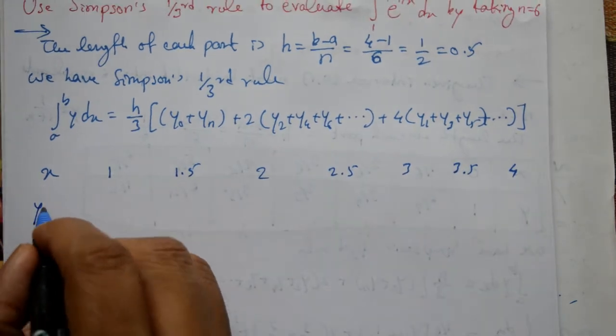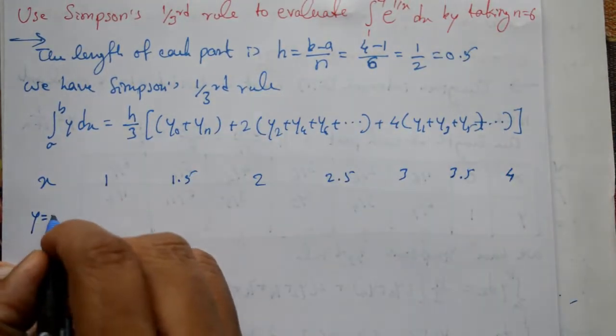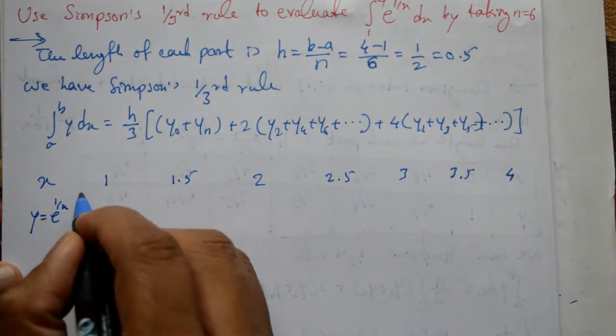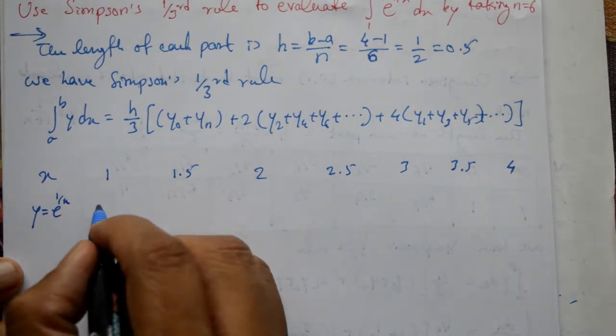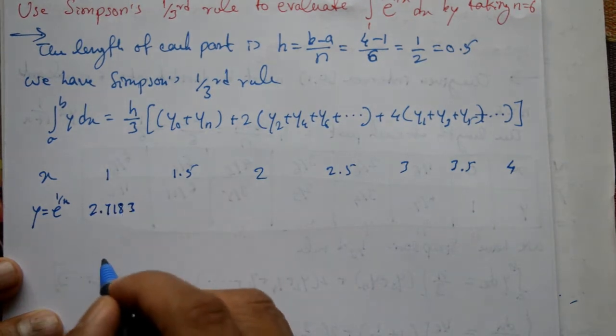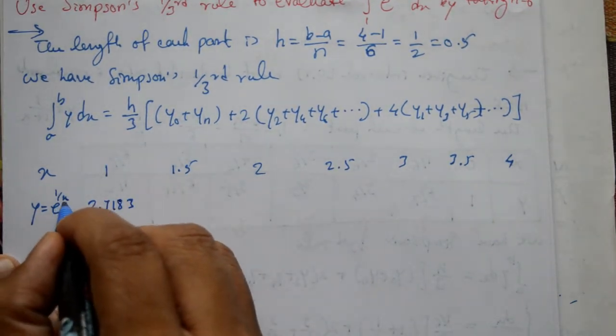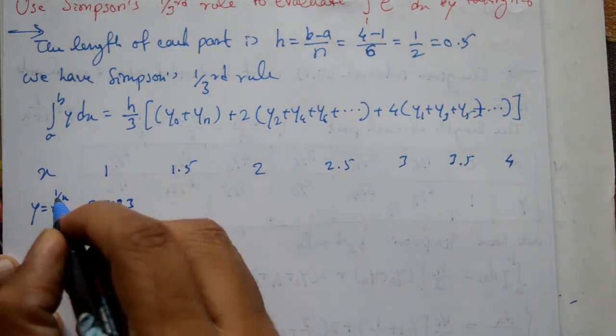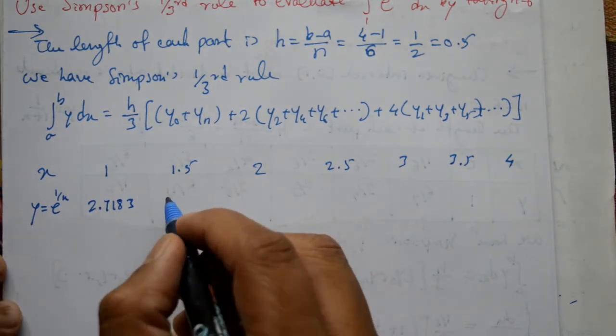Then take y is equal to, y kya hai. So e to the power 1 by x hai. x e raised to 1, e raised to 1 aya to kya hai ga? 2.7183 aya ga. Put x is equal to 1.5 here, e to the power 1 by 1.5. Now using calculator.